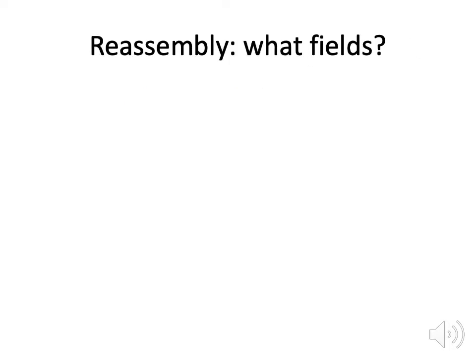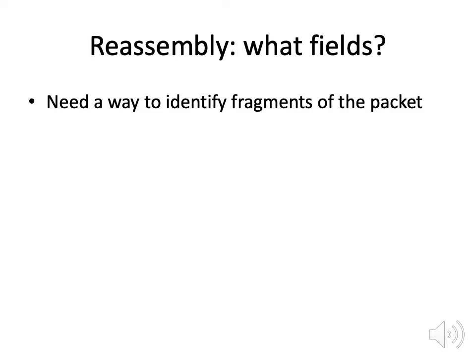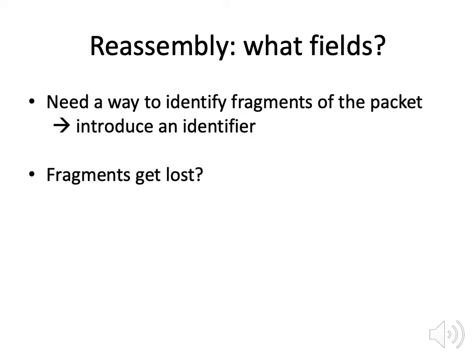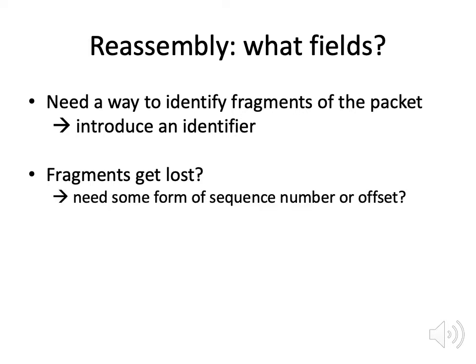What fields should we put in an IP packet to make reassembly work? We need a way to identify the fragments, so we introduce an identifier so that we know all the fragments are related. If fragments get lost, we need some kind of sequence number or offset that says how the fragments relate to each other.